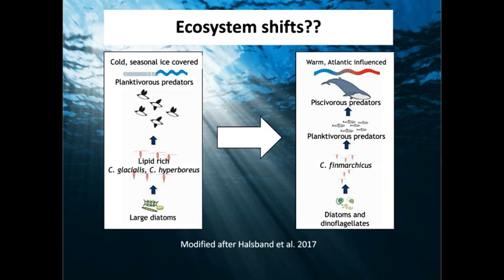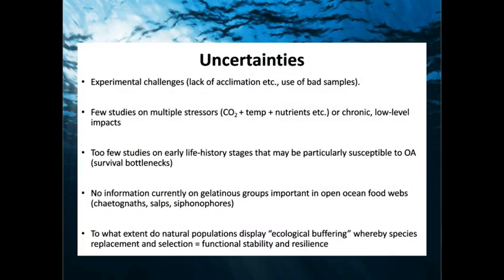There are many uncertainties: experimental challenges mean animals analyzed in the lab may not reflect wild behavior, there are too few studies on multiple stressors and on early life history stages, and there's currently no information on the effects of ocean acidification on gelatinous groups. Jellyfish seem to handle overfishing, global warming, and lower pH better than most. To what extent do natural populations display ecological buffering, whereby species replacement equals functional stability and resilience?